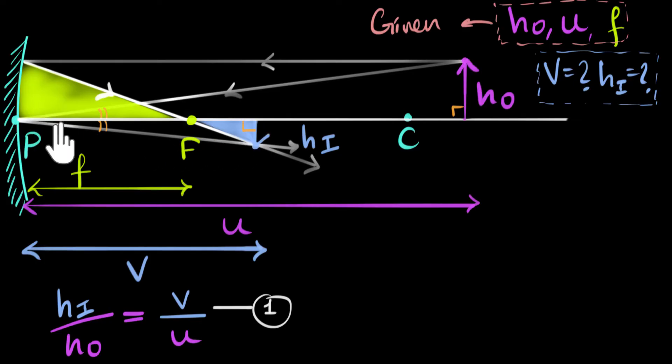So notice that this is right angle, which we already know. This is also a right angle, right? This is also a right angle. And then notice these angles are equal to each other because they're vertically opposite, which means the other angle will also be the same, and therefore we can now say these two are similar triangles.